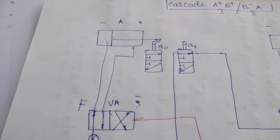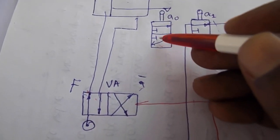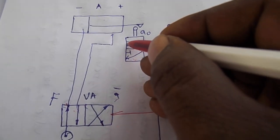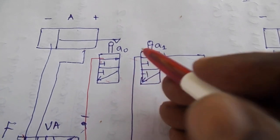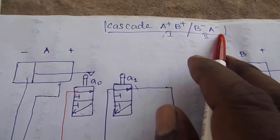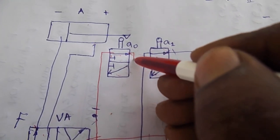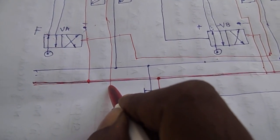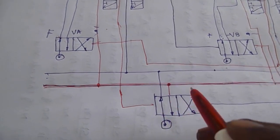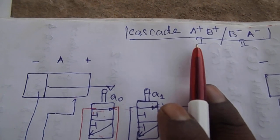This one will be retracted, so we connect the pressure on this one. This one will be retracted, so we connect the group two line. This one will be retracted, so we connect the output. This one will be a group ending, so we connect the group two line. This one will change the group, so we connect the cascade. This one will change the cascade, so we connect the next one.